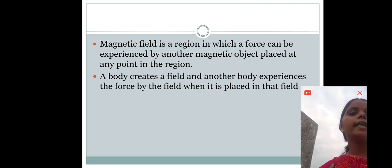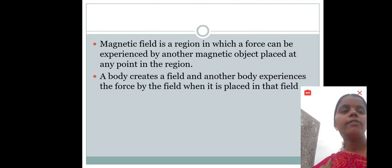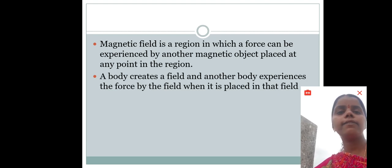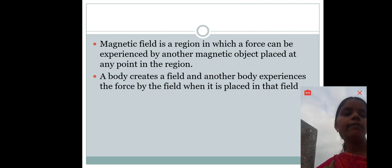Next, a body creates a field and another body experiences the force by the field when it is placed in that field. See here, which body creates a field here? Magnet creates a field. And the magnetic object is experiencing that force by the magnetic field.